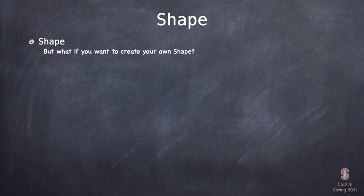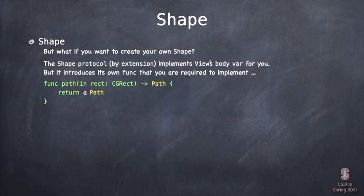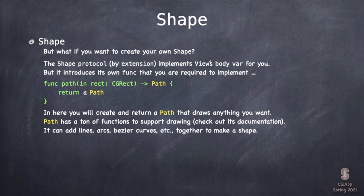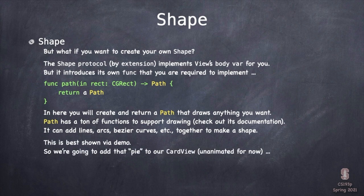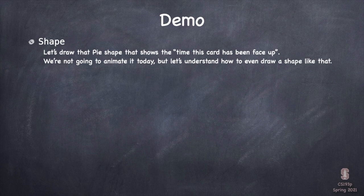What if we want to create our own shape? The Shape protocol — via an extension — implements View's body var for you, so you don't have to do var body. Instead, Shape requires you to implement one function: path(in rect: CGRect) -> Path. The Path struct has lots of functions for drawing: draw a line to here, draw an arc over there. I want you to look at the documentation for Path to see all the things you can do. We're going to do a demo where we draw something and you'll get a real sense of what Path can do.